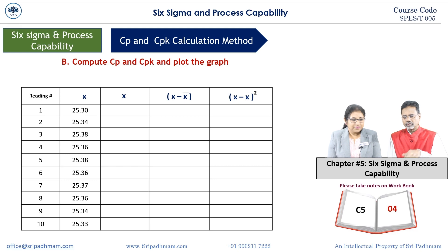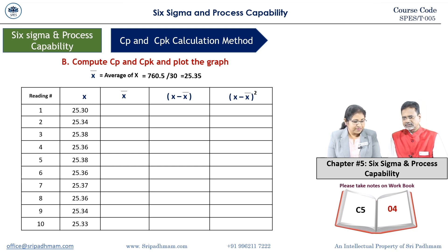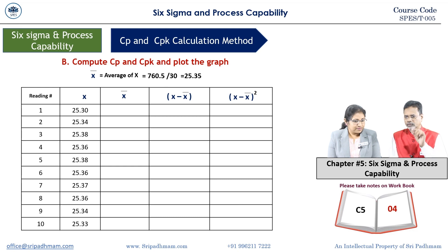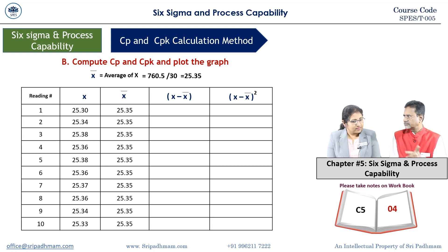We will get the x values and get a total of 30 readings. x-bar is the average of x. That is 760.5 divided by 30 equals 25.35. So 25.35 is the arithmetic mean. We add all x values to get 760.5, then divide by 30 to get x-bar equals 25.35.